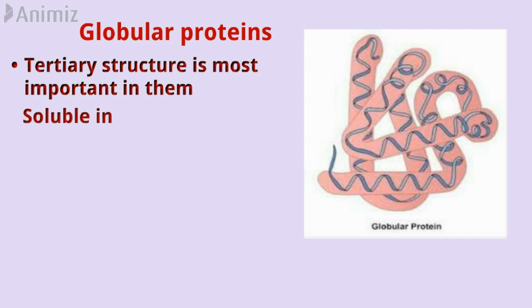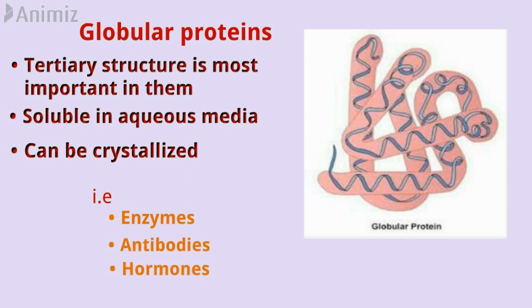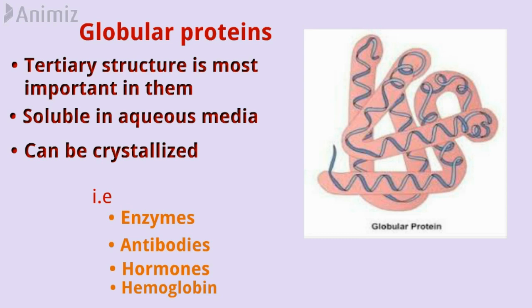Globular proteins are spherical or ellipsoidal due to multiple folding of the polypeptide chain, and the tertiary structure is most important in them. They are soluble in aqueous media such as salt solutions, acid or base solutions, or aqueous alcohol. They can be crystallized and are disorganized by changes in the physical and physiological environment. Examples of globular proteins include enzymes, antibodies, hormones, and hemoglobin.